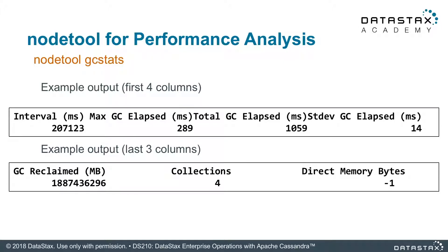The output is very basic, but it has some really important information, like how long it's taken for the GC to elapse, the standard deviation of that GC elapsed time — basically how long it usually takes to run. The higher these numbers, the worse off you are. Java garbage collection is a problem you need to keep track of.